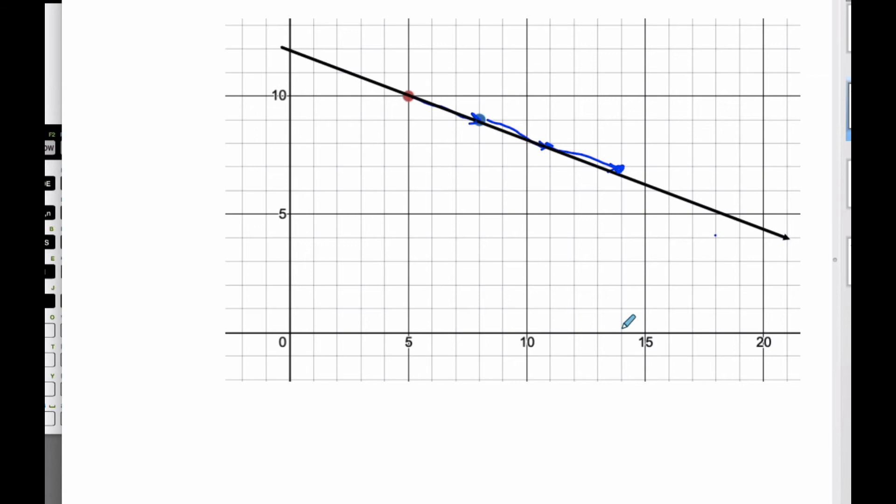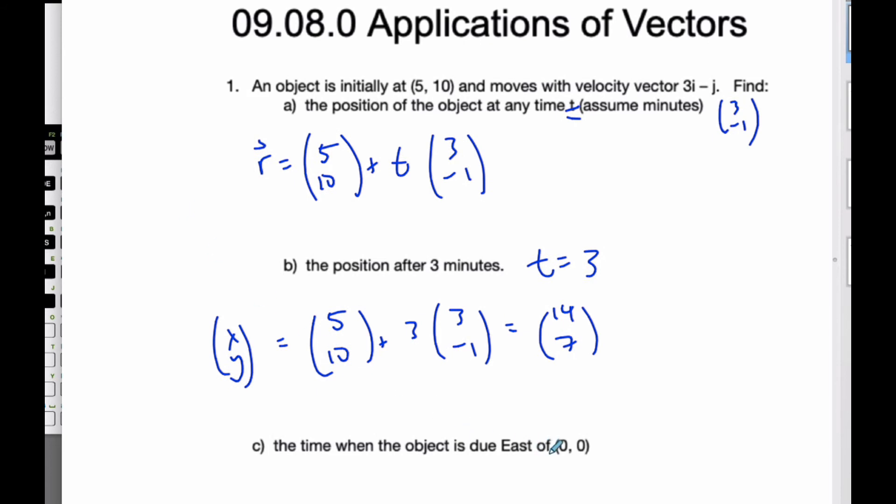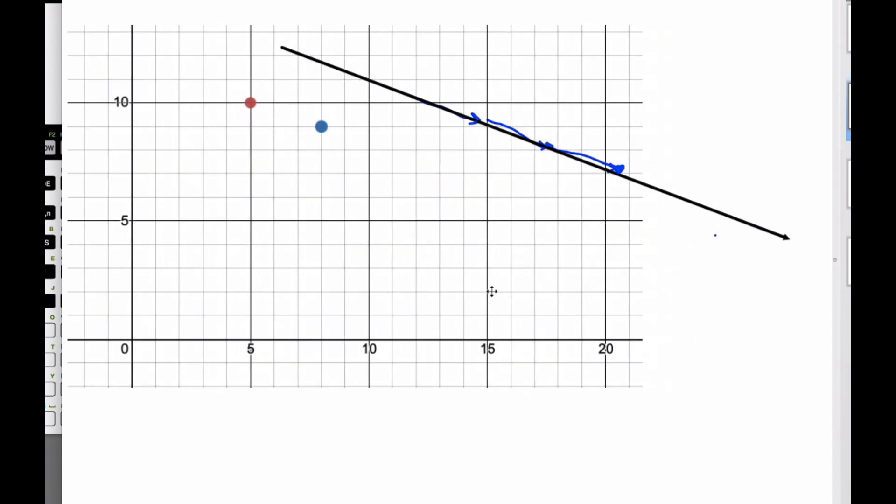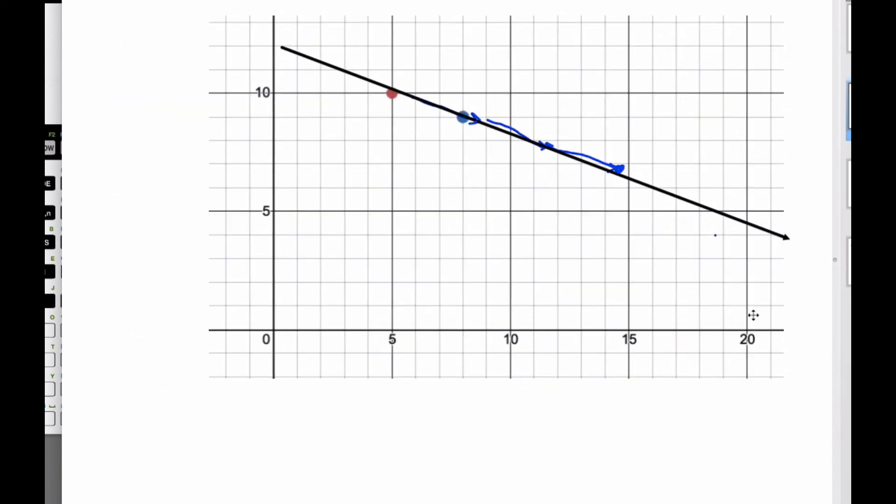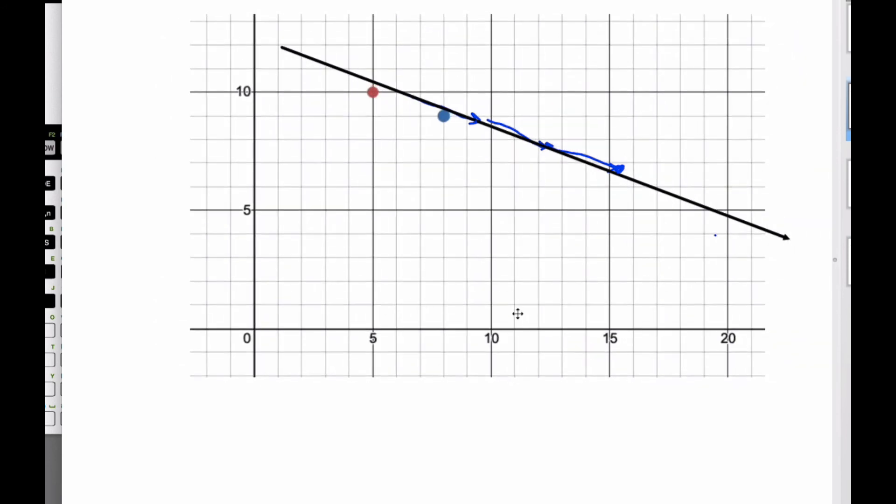And it says find the time when the object is due east of (0, 0). Well, here is (0, 0). Due east of (0, 0) means when is it going to cross the axis. Somewhere along the line, it's going to cross the axis as we go. And so what it means is that the y value is 0.